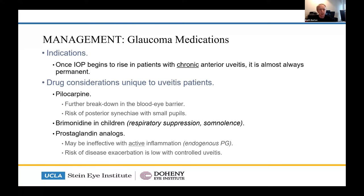Brimonidine in children is bad news — respiratory depression and drowsiness. Prostaglandin analogues: when patients get high pressure, doctors tend to put them on everything. It's worth pointing out that prostaglandin analogues really interfere with your ability to figure out what's going on, because they don't really work in active inflammation. They don't work in Posner-Schlossman syndrome — the eye is full of prostaglandins already, so what's the point of putting in any more?